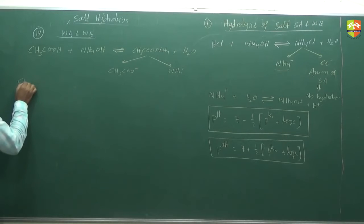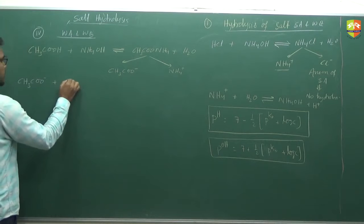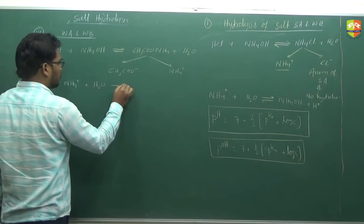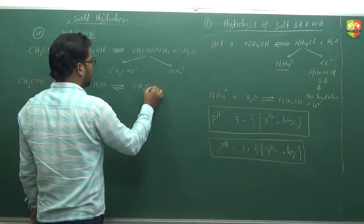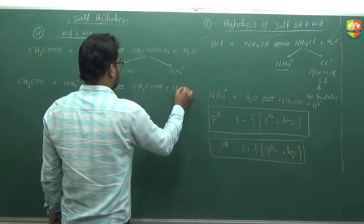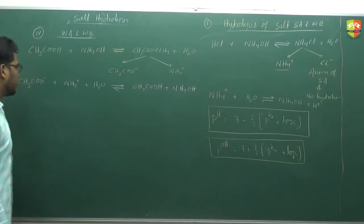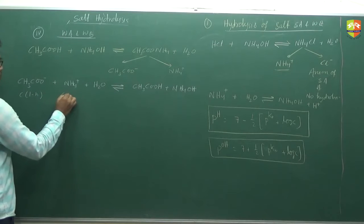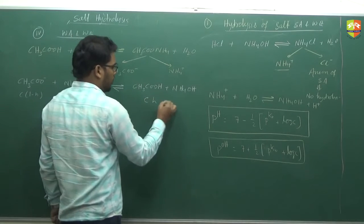The reaction is: CH3COO⁻ plus NH4⁺ plus H2O gives CH3COOH plus NH4OH. The concentrations are: CH3COOH is C(1−h), NH4OH is C(1−h), and the hydrolyzed species are Ch and Ch respectively.